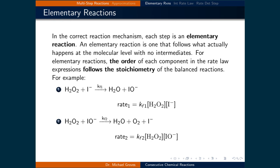Using our peroxide decomposition reaction example, assuming we have the correct mechanism and they are elementary reactions, we can write the rate law expressions using the stoichiometry of the balanced chemical reactions. For the first step, rate1 = kr1[H2O2][I-].